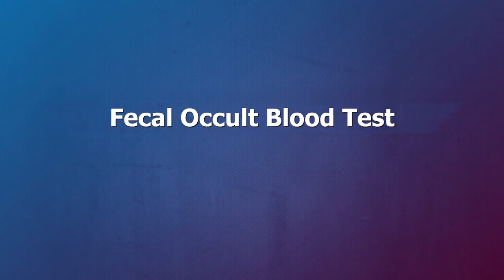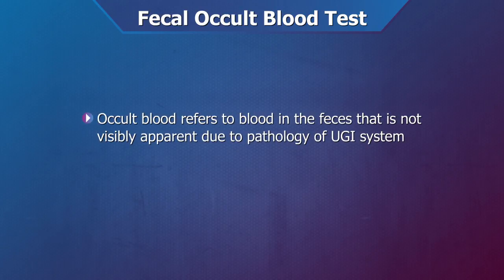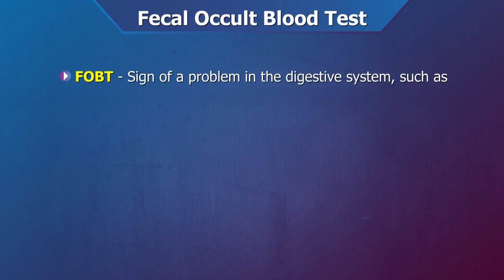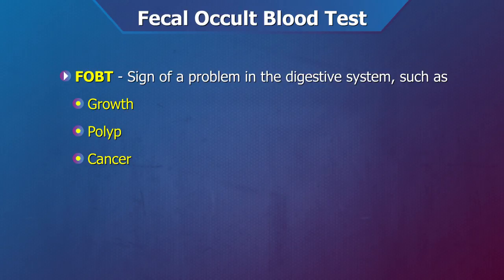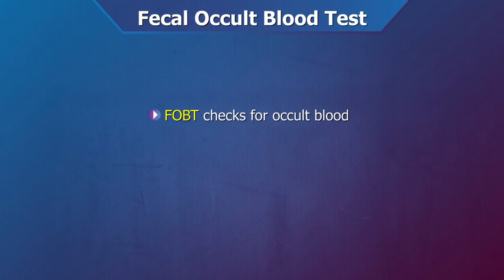Fecal Occult Blood Test. Fecal occult blood refers to blood in the faeces that is not visibly apparent. Fecal occult blood can be a sign of a problem in the digestive system such as a growth, polyp, cancer, or hookworm infestation in the colon or the rectum. A Fecal Occult Blood Test checks for hidden or occult blood in the stool.